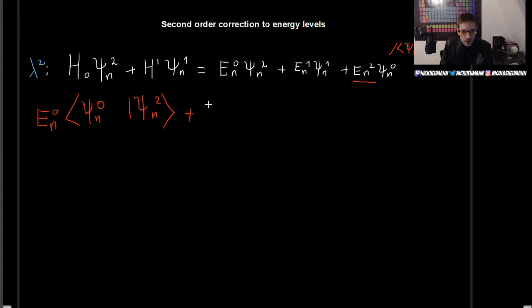Now, the second one, we're going to have Psi_n^0, H prime, Psi_n^1. And this is going to be equal to, let's see, well, now we're going to have the bra of Psi_n^0, ket of Psi_n^2. And we have the energy levels of the unperturbed system, which is, of course, just a number. So we can pull it out. So we get this right here. And you can notice already that it is exactly the same that we have on the left hand side. So these two will actually just cancel each other out.